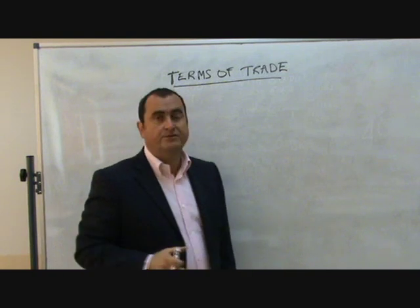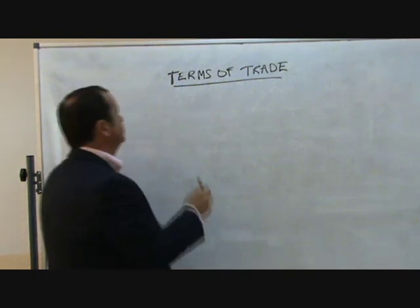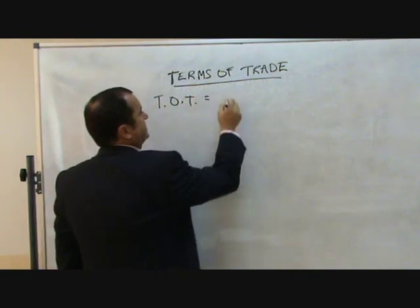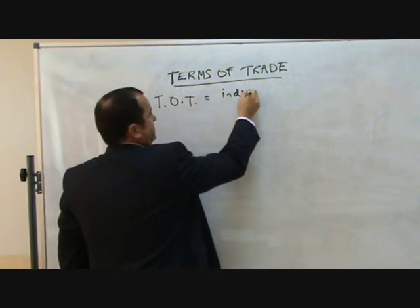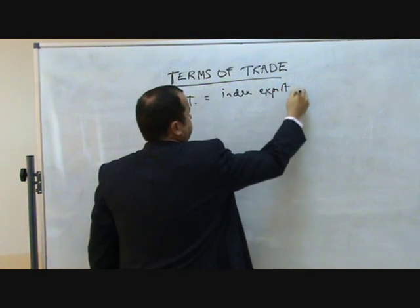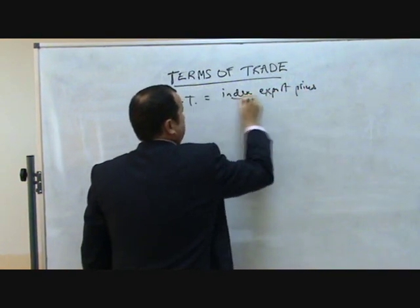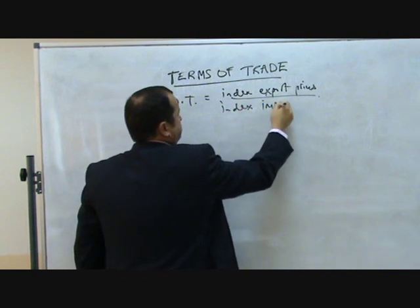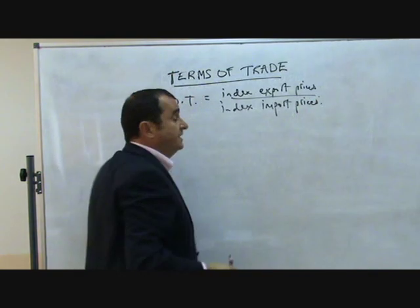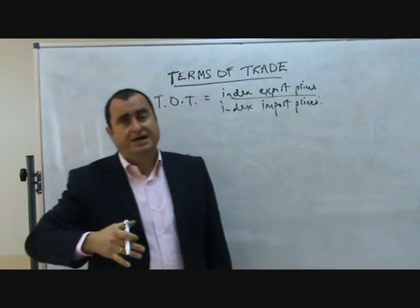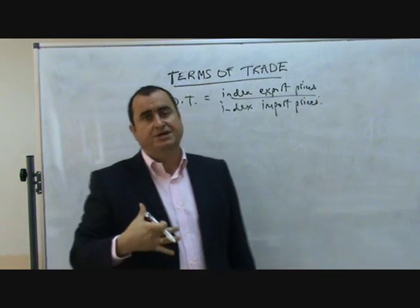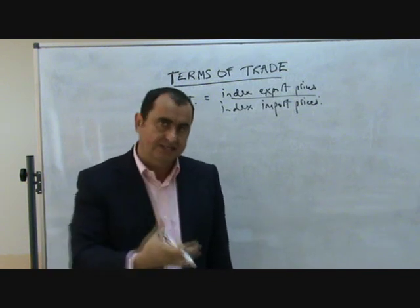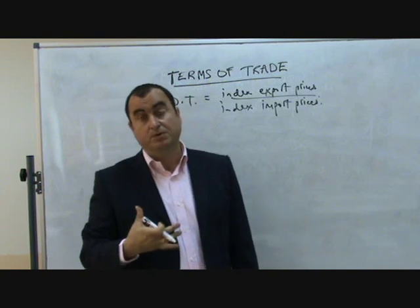In this video I want to look at the Terms of Trade. Terms of Trade are calculated by an index of export prices divided by an index of import prices. Terms of Trade are about the ratio between the price of the goods that a country exports compared to the price of goods that the country imports.